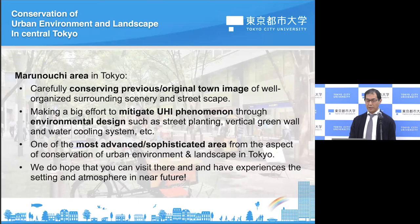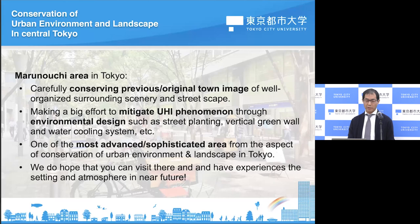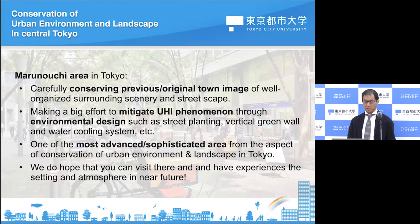As I mentioned, the Marunouchi area in Tokyo is carefully conserving the previous town image and original well-organized surrounding scenery and streetscape, while making a big effort to mitigate the urban heat island phenomenon through environmental design such as street planting, vertical green walls, and water cooling systems. The Marunouchi area is one of the most advanced and sophisticated areas from the aspect of conservation of urban environment and landscape in Tokyo. We really hope that you can visit there and experience the setting and atmosphere in the near future. That's all for my lecture — thank you very much.